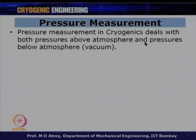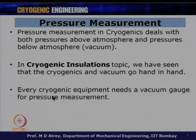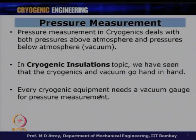Pressure measurement in cryogenics deals with both pressure above atmosphere and pressures below atmosphere, which is vacuum. Cryogenics and vacuum go hand in hand. Every cryogenic equipment needs a vacuum gauge for pressure measurement. The order of vacuum matters — whether it is 10⁻², 10⁻⁵, or 10⁻¹⁰ — so it needs to be monitored. Most cryogenic experiments will need a vacuum gauge.